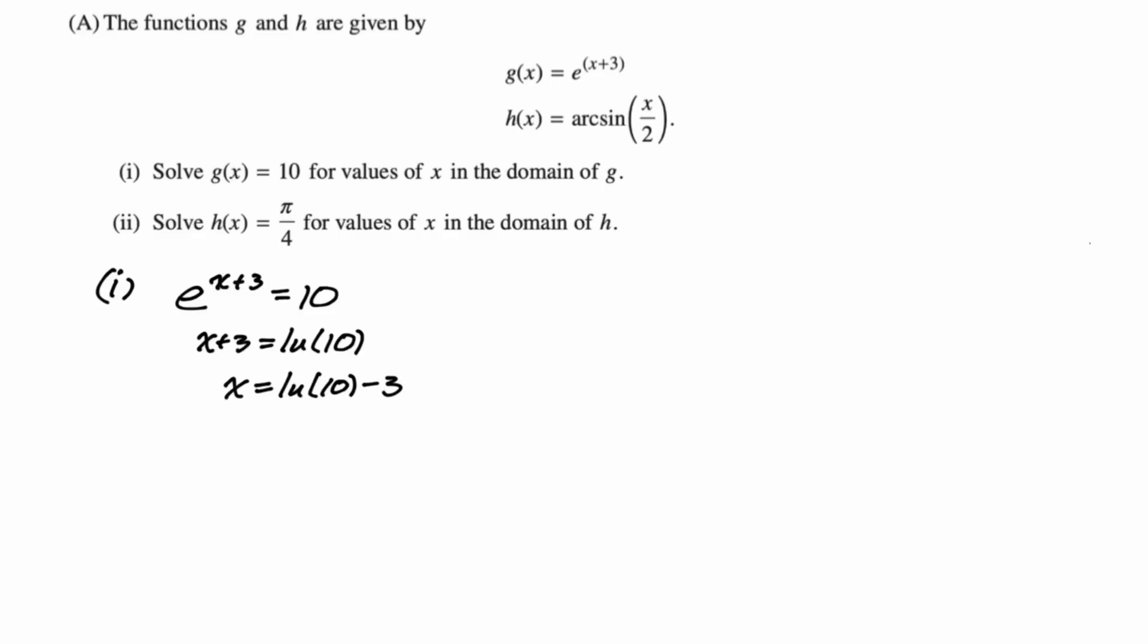Let's look at number 2. Solve h(x) is π/4 for values of x in the domain of h. Someday you might have to really worry about the domain on this. At this point, I don't think you have to worry about the domain so much. They're just saying there is a domain restriction that you maybe potentially should think about. So I'm going to think about it a little, but basically we start off with inverse sine or arcsine of x/2 is equal to π/4.